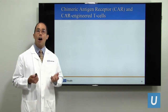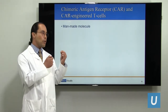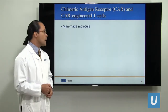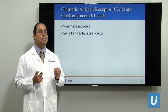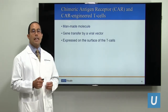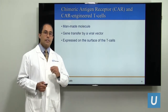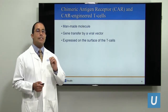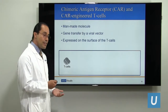Chimeric antigen receptor, or CAR, is a man-made molecule — a creation that enables cells to track and destroy cancer. The CAR molecules are delivered by genetic engineering using a virus that goes into the cells and delivers the CAR into every cell. The CAR molecules are then expressed on the surface of T cells, or T lymphocytes. These are the most important cells of the immune system — the most specific, able to proliferate and orchestrate the whole immune response.